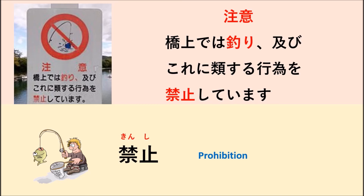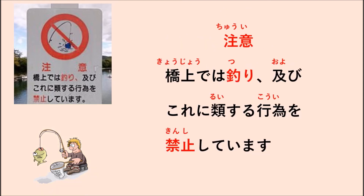Now you already understand the meaning of each word on this sign. So let's read together. Chui — chui means caution or notice. Kyojou-de-wa — that means on the bridge. Tsuri — fishing. Oyobi — and. Kore ni — this. Kore means this action or action similar to this.